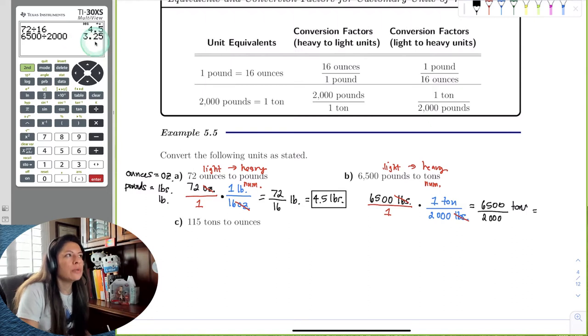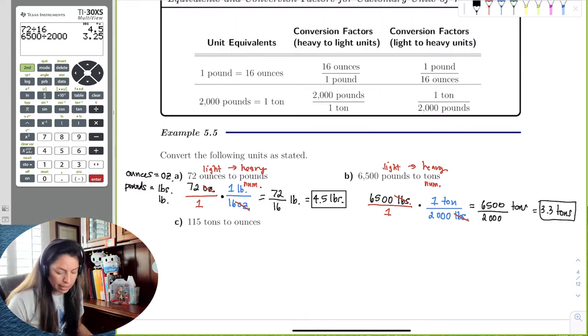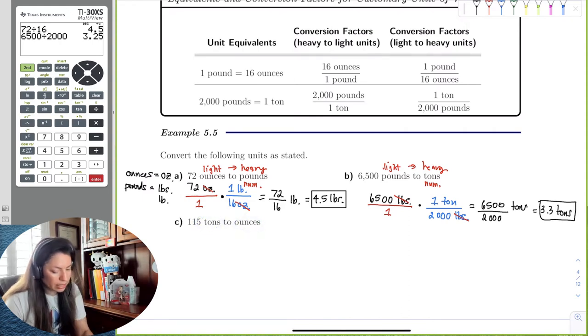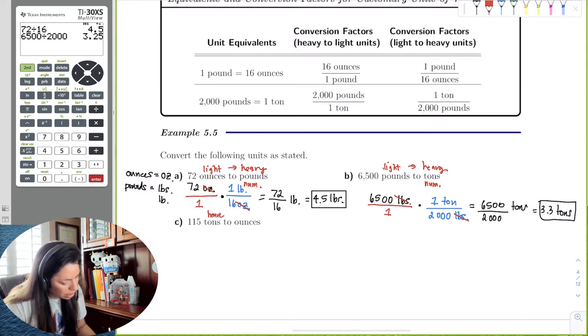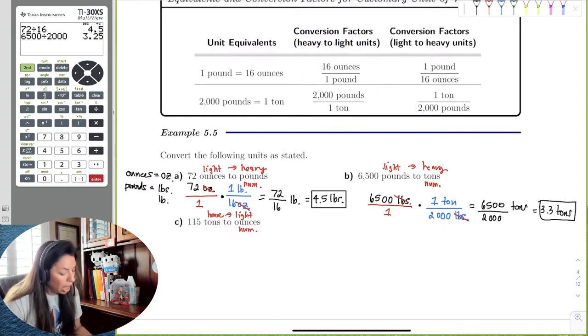Because they gave us whole numbers, we can still round to the nearest tens place. So the 5 will make this 3.3 tons. The last one is going from tons to ounces. I noticed that I am going from heavy to light, but I also can notice that I need ounces in the numerator. I don't have any unit equivalents from tons to ounces, but I do have ounces to pounds and pounds to tons. So let's go ahead and use that one.